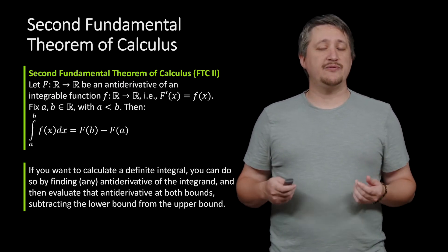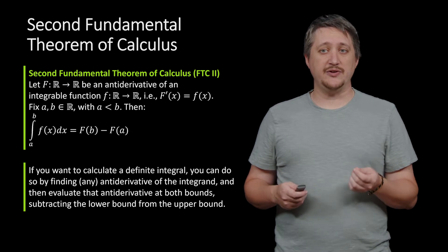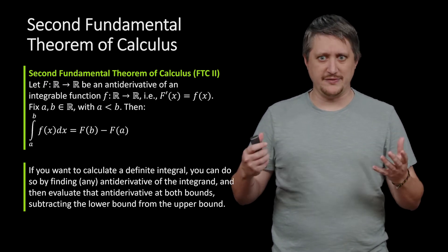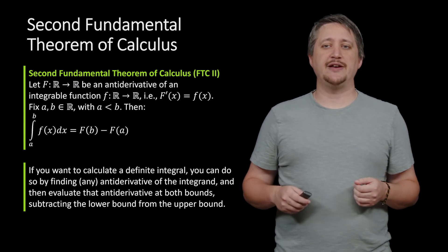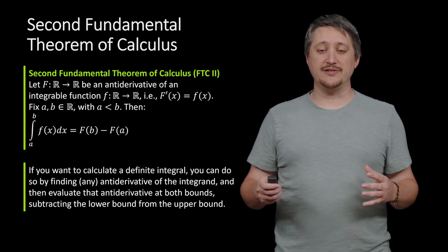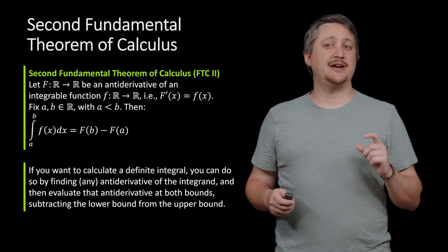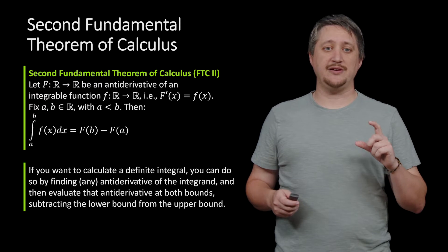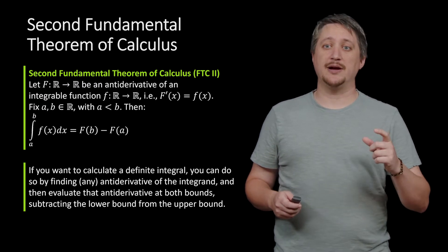This is saying if you want to find the value of a definite integral, even the classic ones we've been looking at like 3 to 17, you can do so by finding any antiderivative of that integrand, the function inside, and then evaluating that antiderivative at both bounds, subtracting the lower bound from the upper bound.